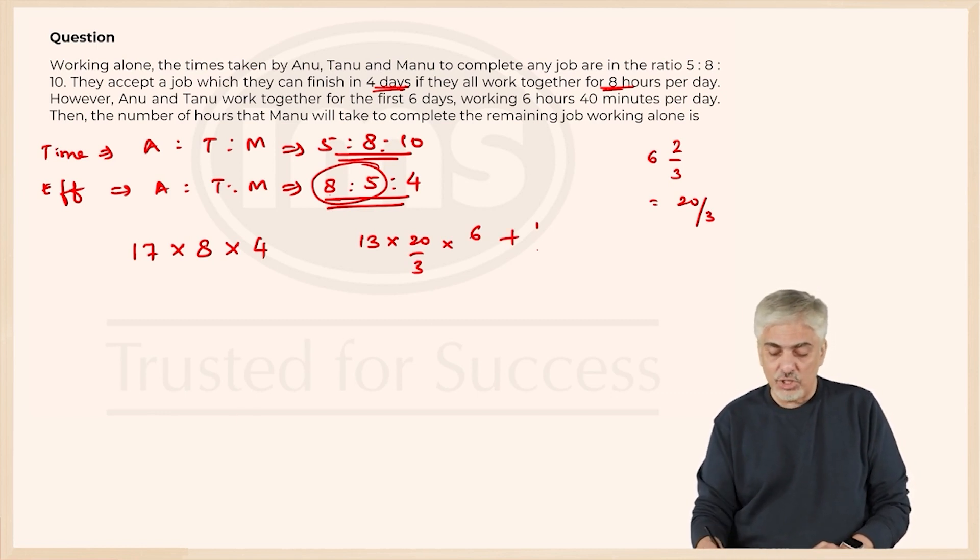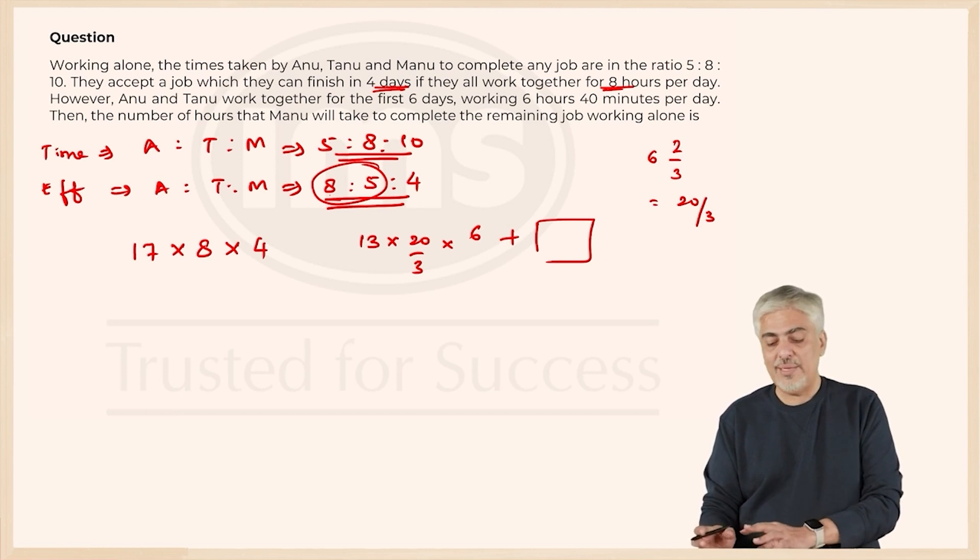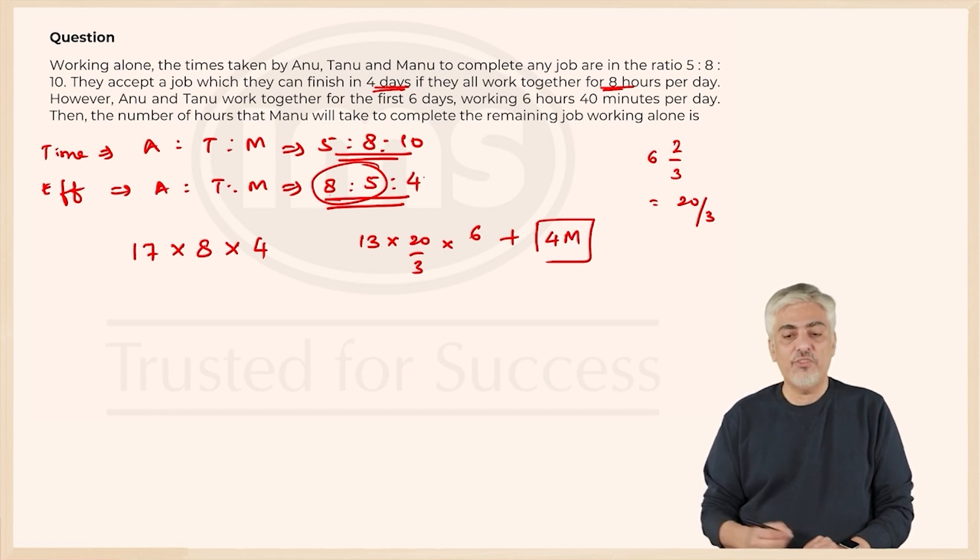The remaining work has to be done by M. The question asks to find the number of hours that M will take to complete the job. So whatever work will be remaining, that divided by 4 will give me the number of hours. You can call it as 4M if you want, and you have to find M now.